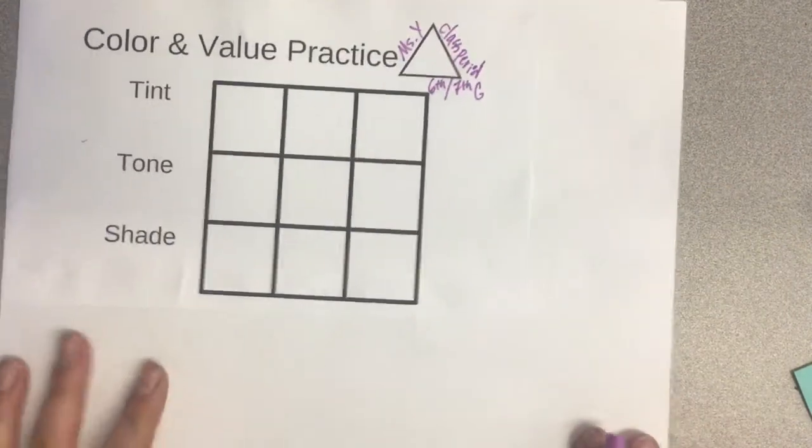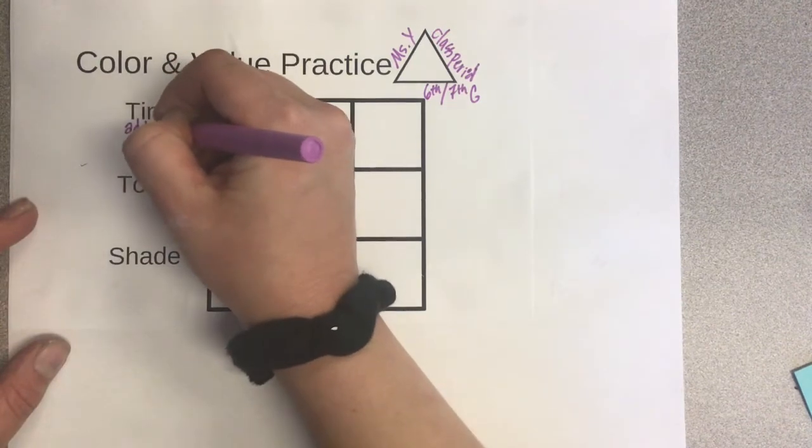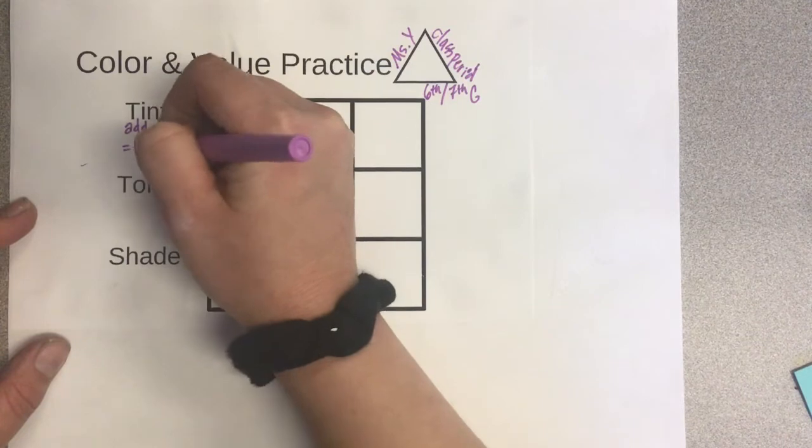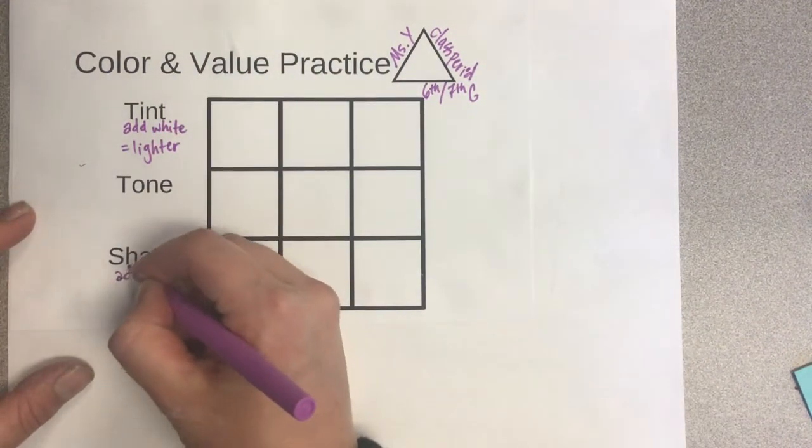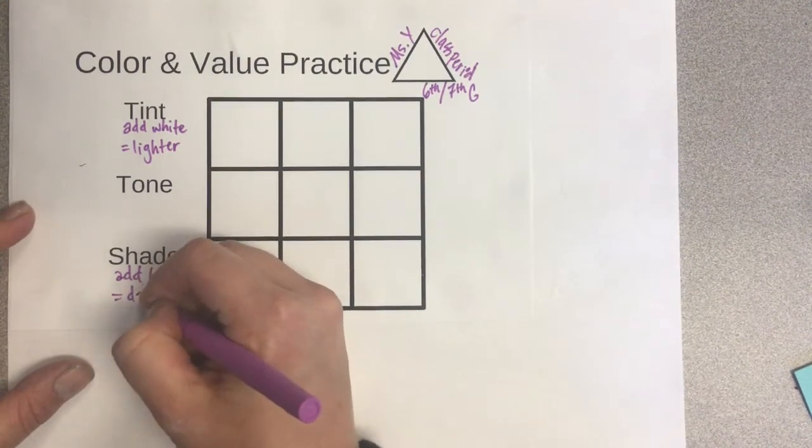Now I'm ready to get started. A tint is when you add white to a color to make it appear lighter. A shade is when you add black to a color or hue to make it appear darker.